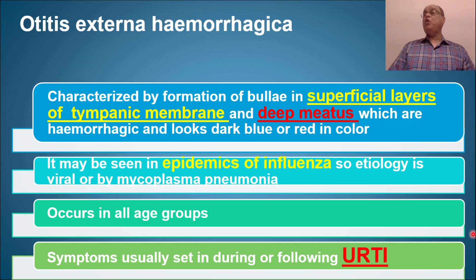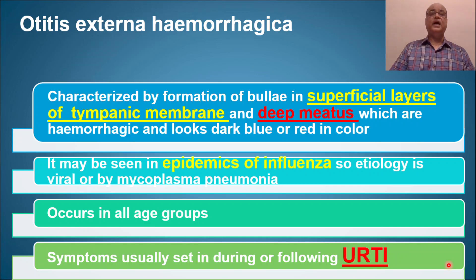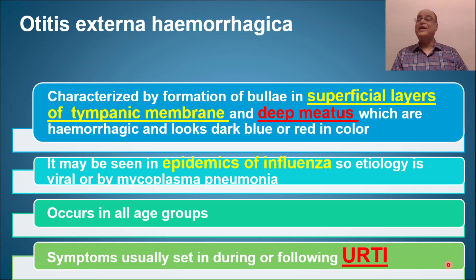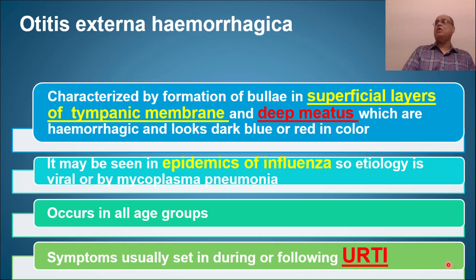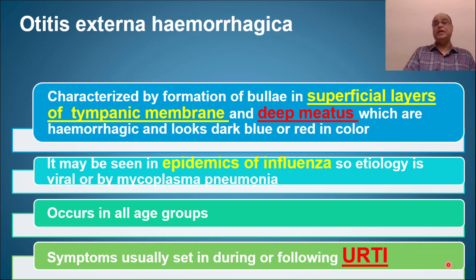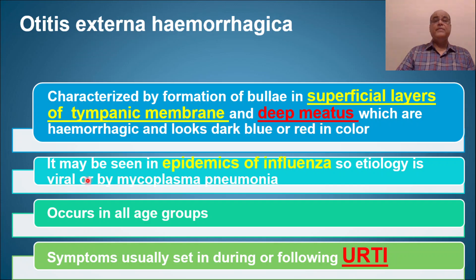It is characterized by the formation of bullae in the superficial layers of the tympanic membrane and deep meatus of the external auditory canal. These bullae are hemorrhagic, appearing dark blue or red on otoscopy. In herpes zoster oticus the bullae look fluid-filled because they contain watery fluid, but here they are blood-filled — hence the term 'hemorrhagica.'